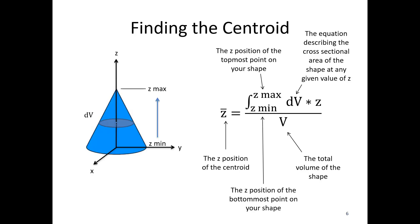So looking back at the cone, the cross-section at any given z height is going to be a circle. So the area of a circle is pi r squared. From there, r is not something we want to leave in — we want to define r in terms of z. That radius is going to decrease linearly, so we create an equation for the radius at a given value of z, plug that into pi r squared. All of that gets multiplied by z, and then we take the integral of that whole mathematical function.